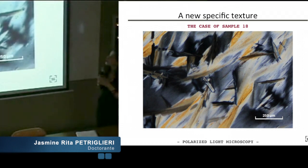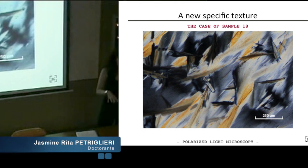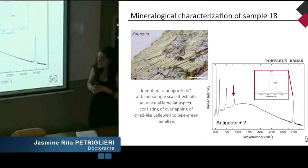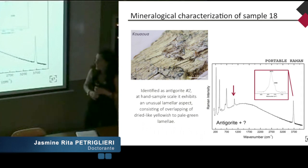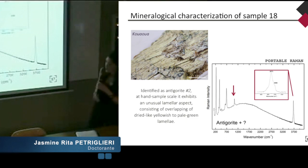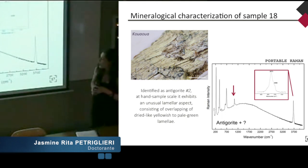I would like to describe sample 18, which shows a new, specific and unusual texture. This is an image in polarized light microscopy on a petrographic thin section, and we can observe unusual star and fan-formed aggregates. This sample was identified by mine geologists as antigorite degree of alteration number 2. At the hand scale, it exhibits an unusual lamellar aspect consisting of the overlapping of dried light yellowish to pale green lamellae.